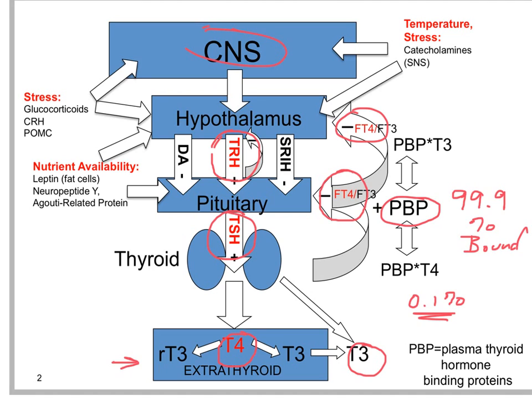Those are the core elements of the hypothalamic, pituitary, and thyroid axis. We'll talk about deiodination in peripheral or extrathyroidal tissue in a different unit, but suffice to say there is a control mechanism to activate to T3 or inactivate to reverse T3 within specific tissues.